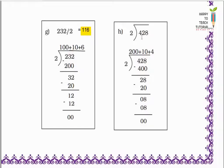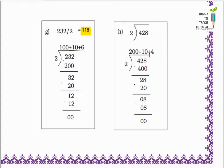Next: 428 divided by 2 — we have to distribute 428 among 2 people. I start by giving 200 to each. 200 into 2 equals 400. 428 minus 400 equals 28. Still I have to distribute 28 among 2 people. Next I give 10 to each. 2 tens are 20. 28 minus 20 equals 8. Still I have to distribute 8 among 2 people. Next I give 4 more to each. 2 fours are 8. 8 minus 8 equals 0, remainder is 0. Each one gets 200 plus 10 plus 4 equals 214.